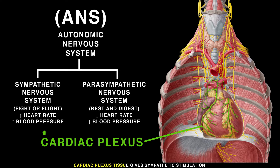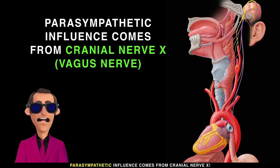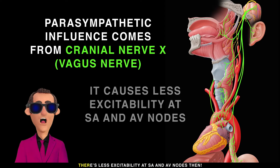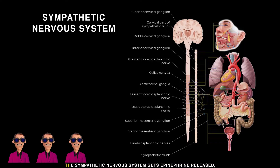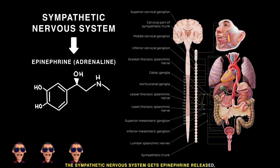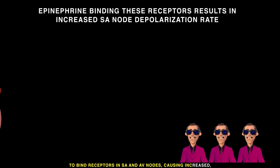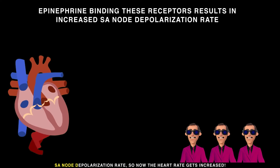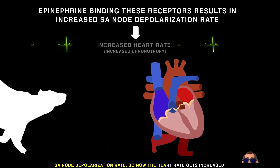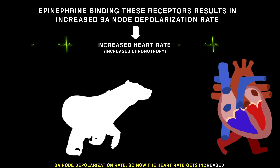The ANS has an effect on cardiac conduction. The cardiac plexus provides sympathetic stimulation, while parasympathetic influence comes from cranial nerve 10 (vagus), which reduces excitability at the SA and AV nodes. The sympathetic nervous system causes epinephrine release, which binds receptors in the SA and AV nodes, increasing the SA node depolarization rate and thus increasing heart rate.